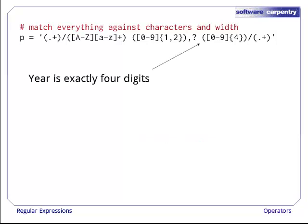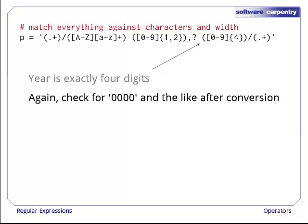Finally, the year is exactly four digits, so it's the set of characters [0-9] repeated four times. And again, we'll check for invalid values like 0000 after we convert to integer.